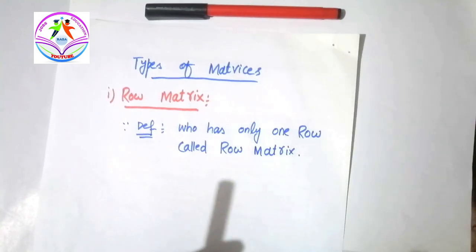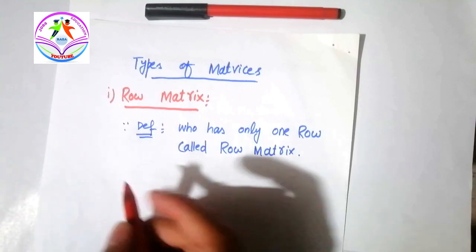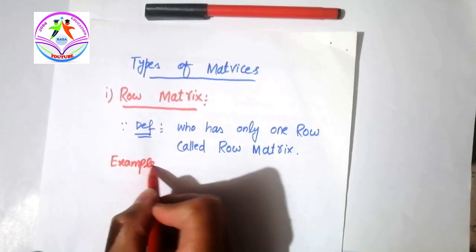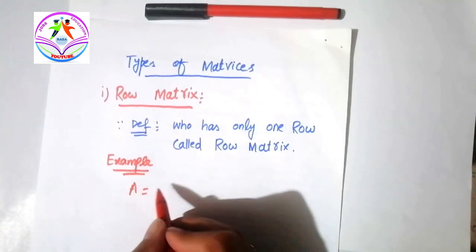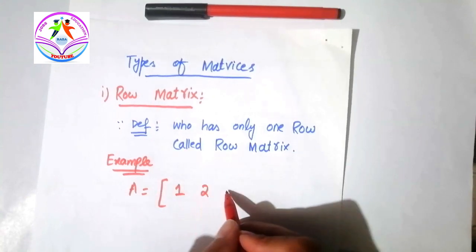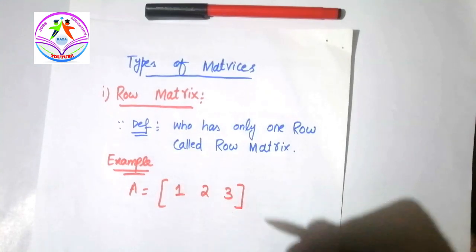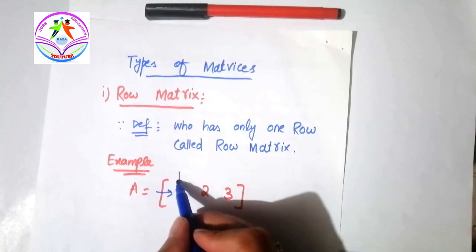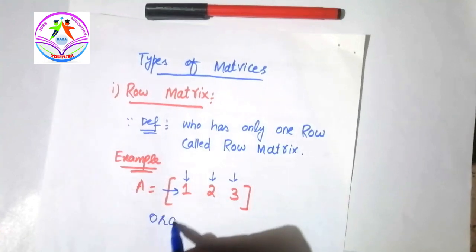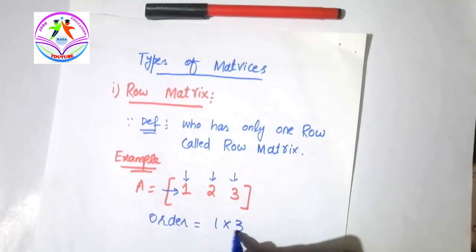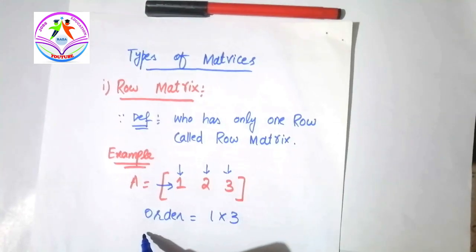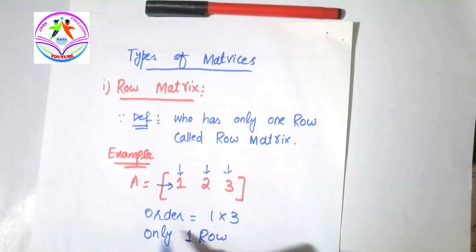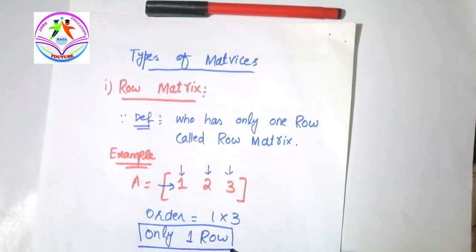Let me give you an example to understand it easily. For example, A is equal to [1, 2, 3]. You can see that in matrix A there is only one row and three columns. The order is 1×3. So we can say that this is a row matrix because it has only one row. Therefore, A is a row matrix.